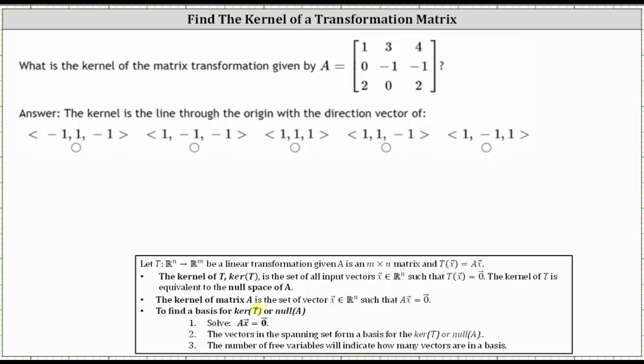To find a basis for the kernel of T, we need to solve the equation matrix A times vector x equals the zero vector. The vectors in the spanning set form a basis for the kernel of T, and the number of free variables will indicate how many vectors are in a basis. Let's set this up on the next slide.